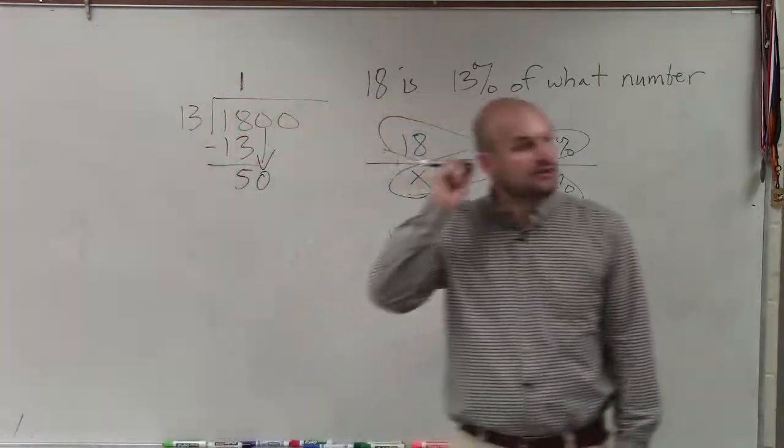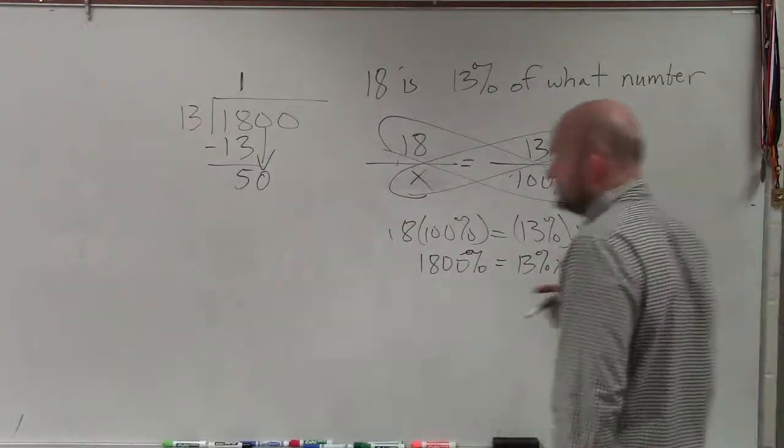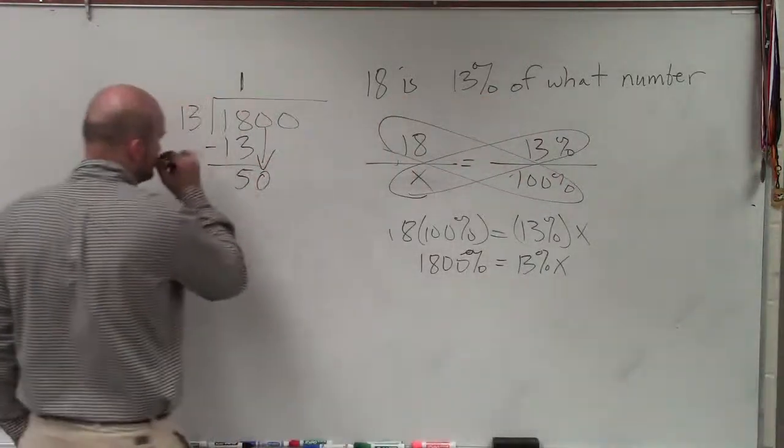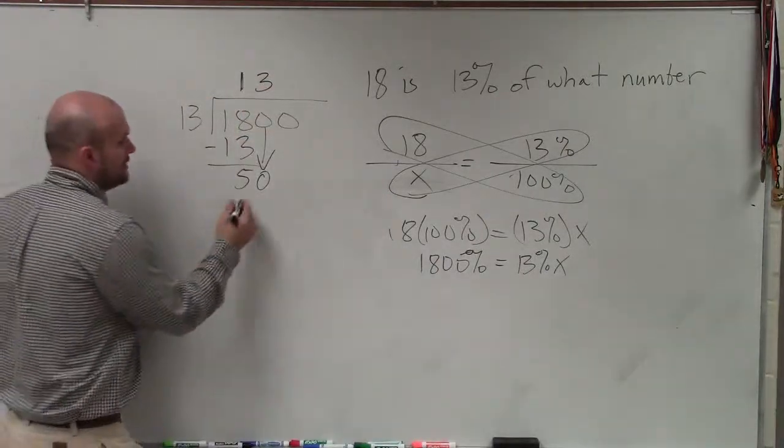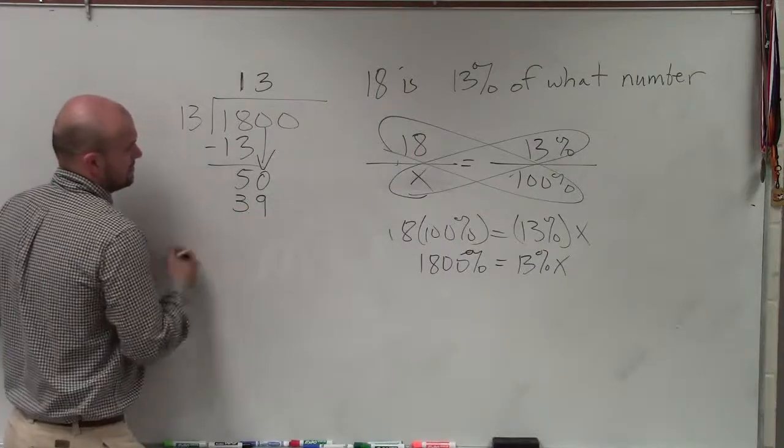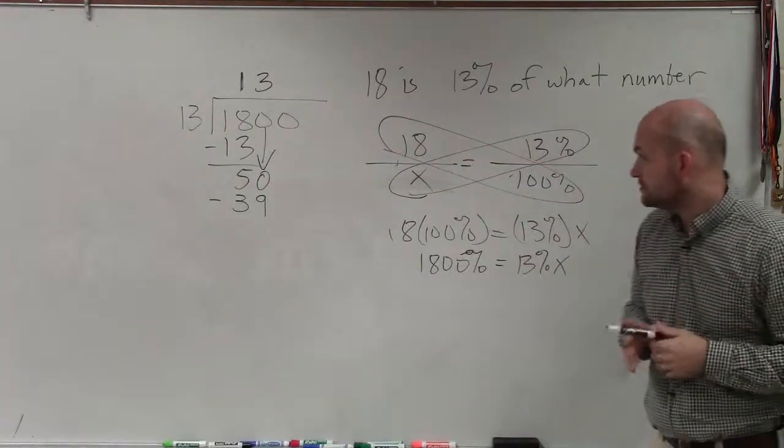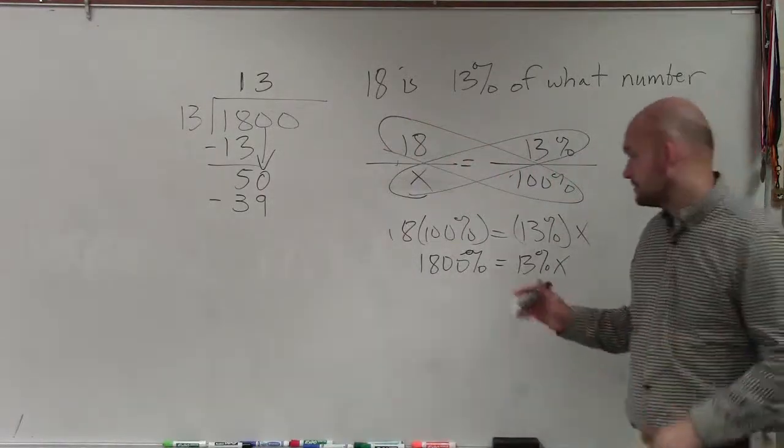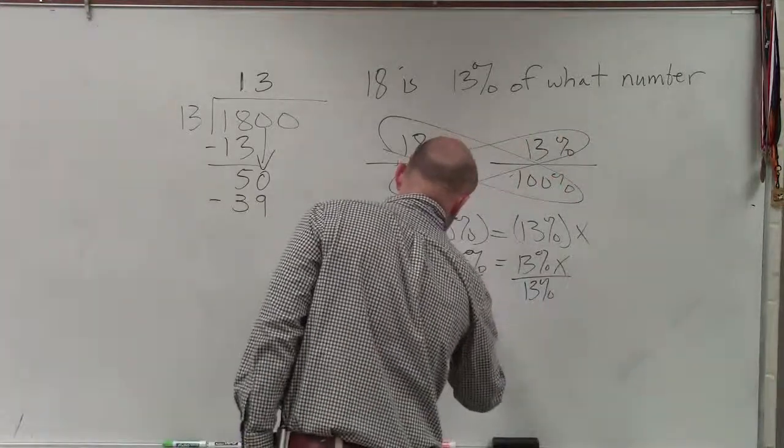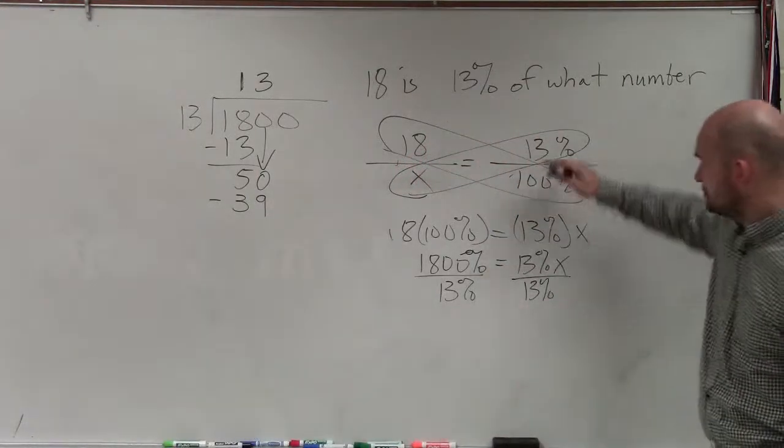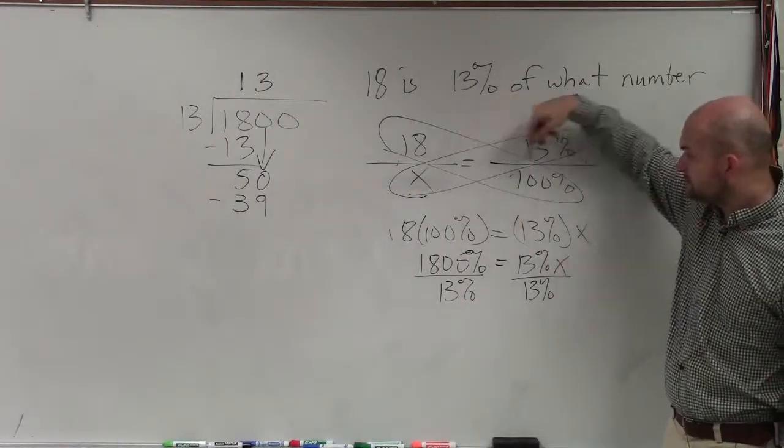Then we subtract 18 from 13, which is going to give us 5. 13 does not divide into 5, so we bring down the next 0. But 13 does go into 50. And it goes in there three times. 3 times 13 is going to be 39. Where'd I lose you?